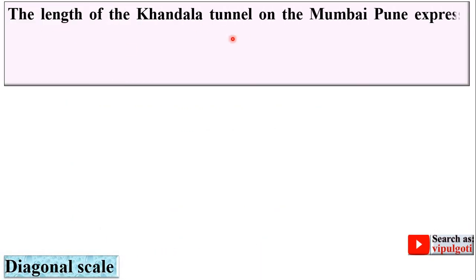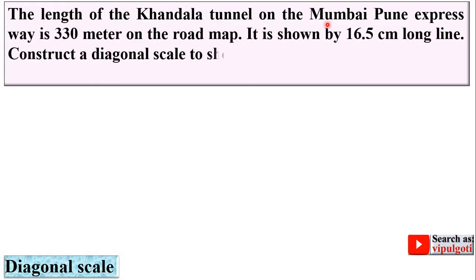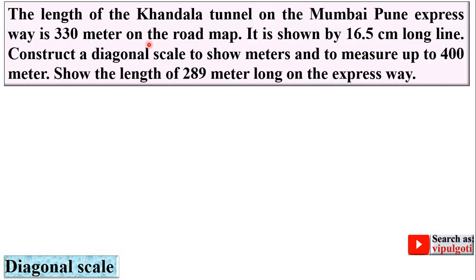Let's see the description once again. The length of the Khandala tunnel on the Mumbai-Pune Expressway is 330 meters on the road map, and it is shown by a 16.5 centimeter long line on the map. Construct a diagonal scale to show meters and to measure up to 400 meters — that is the maximum distance to be measured. Finally, we have to show 289 meters on the diagonal scale.